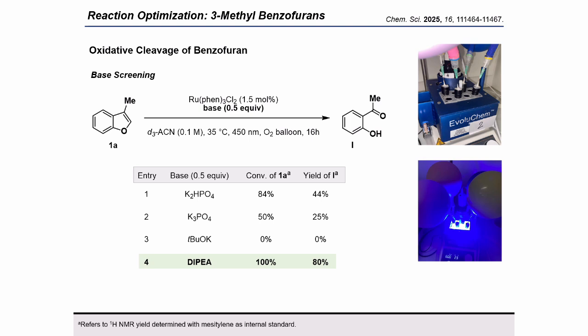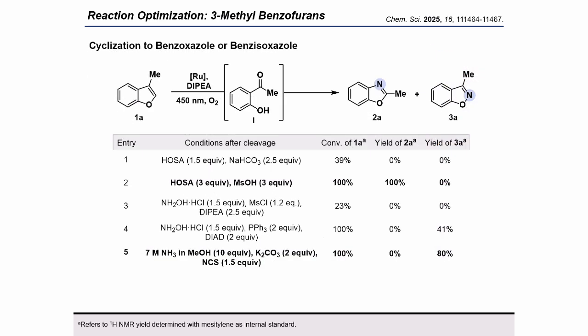Unfortunately, water was still needed for the desired transformation. We wanted to avoid water because it could interfere with the next step in forming benzoxazols or isoxazols. Therefore, we screened different bases in the absence of water. Inorganic bases didn't promote oxidative cleavage, potentially due to solubility issues. We were pleased to see that addition of diisopropylamine afforded the desired cleaved product in 80% yield. Having established a successful and general oxidative cleavage method, we focused on the ring-closing sequence.